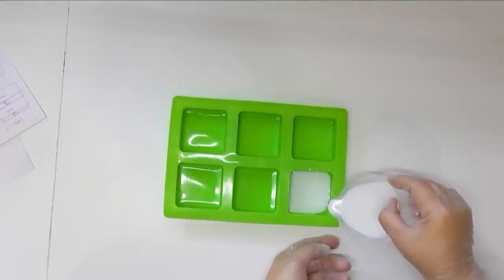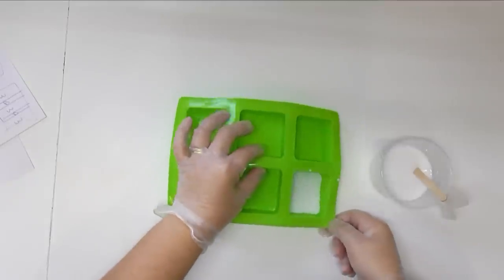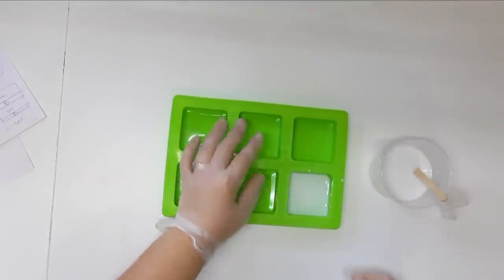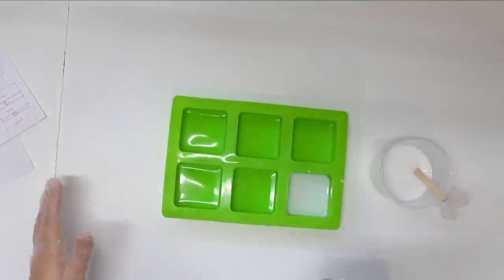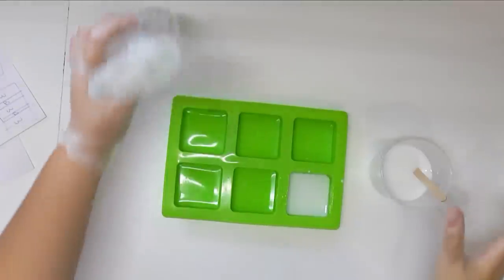Just pour a little bit more, make sure it comes up to all of the corners. I've got some rubbing alcohol here, just give it a quick spritz to burst those bubbles.